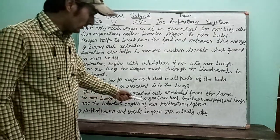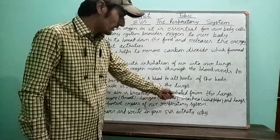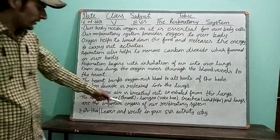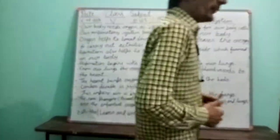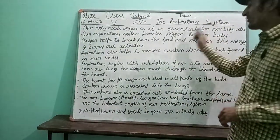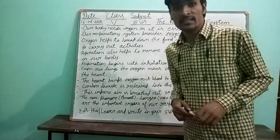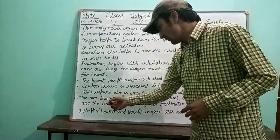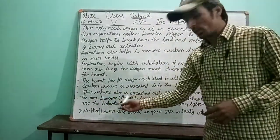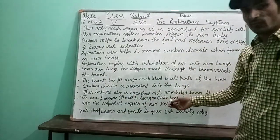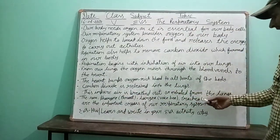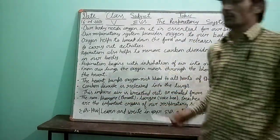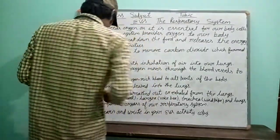The nose, pharynx (throat), larynx (voice box), trachea (windpipe), and the lungs are the important organs of our respiratory system. These are the body parts that help to complete this process. These are the main organs which help in the working of the respiratory system.